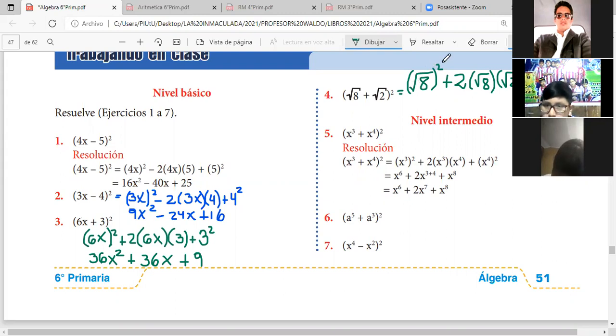Aquí se van a cancelar el exponente 2 con la raíz cuadrada y me va a quedar 8 solito. Ese 2 va a multiplicar a este producto: raíz cuadrada de 8 por raíz cuadrada de 2. Como a ambos está afectando la raíz cuadrada, se le considera como una sola raíz cuadrada del producto de 8 por 2. Solamente se puede hacer esto si las raíces son las mismas para los dos.